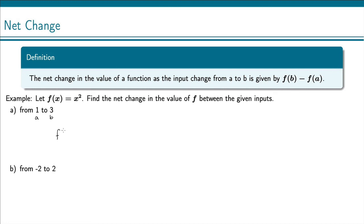And our net change is f of b minus f of a. So that is f of 3 minus f of 1. And now we use our definition of a function, our function which is x squared. And that's going to be 3 squared minus 1 squared. And this gives us 8.